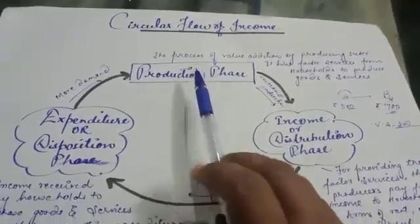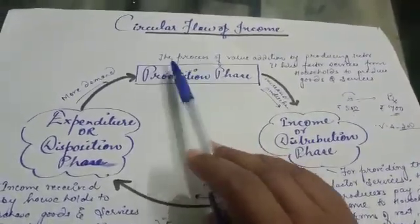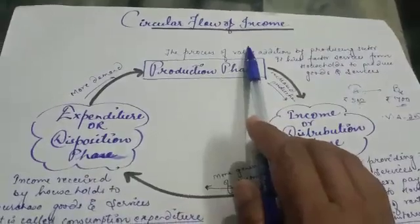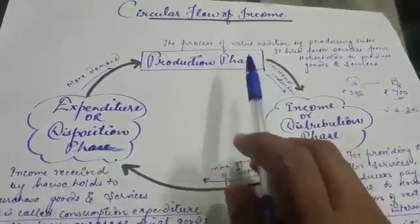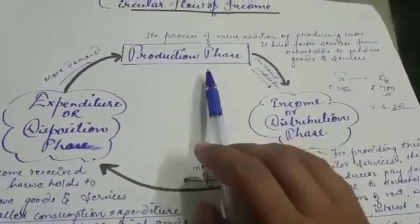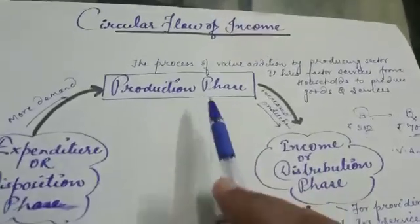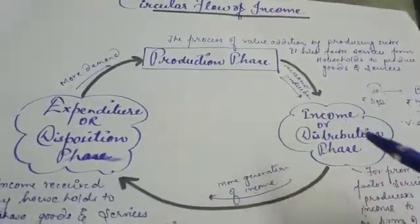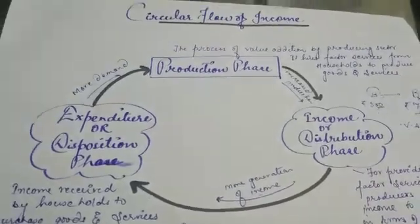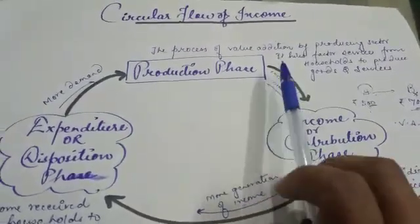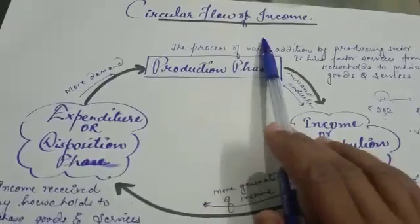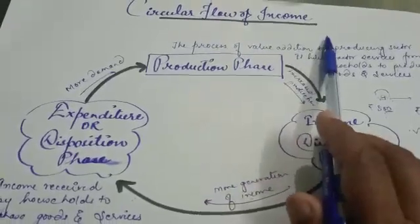Good evening students. In continuation of our last topic, circular flow of income, we had begun with the four sectors in an economy — the four important sectors. Those were household sector, business sector, government sector, and rest of the world sector. Now let us come to the main topic: circular flow of income.